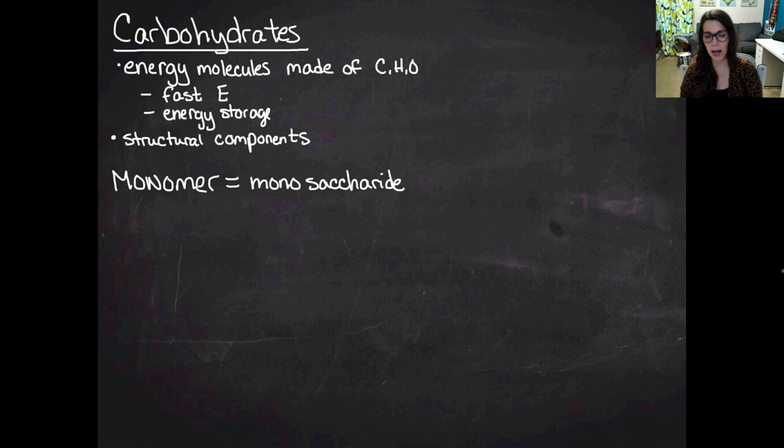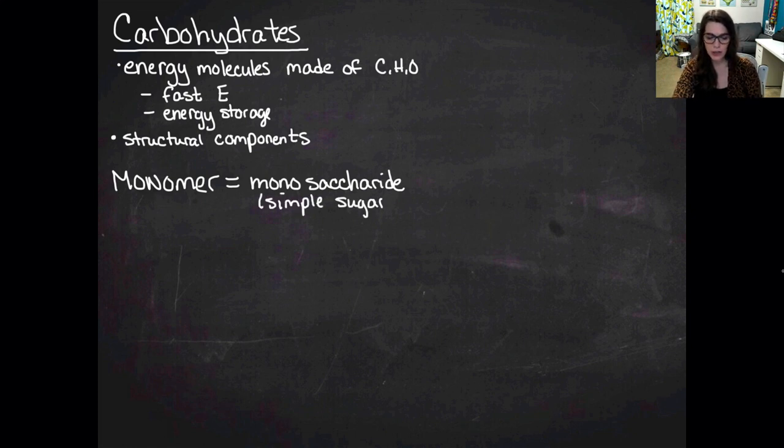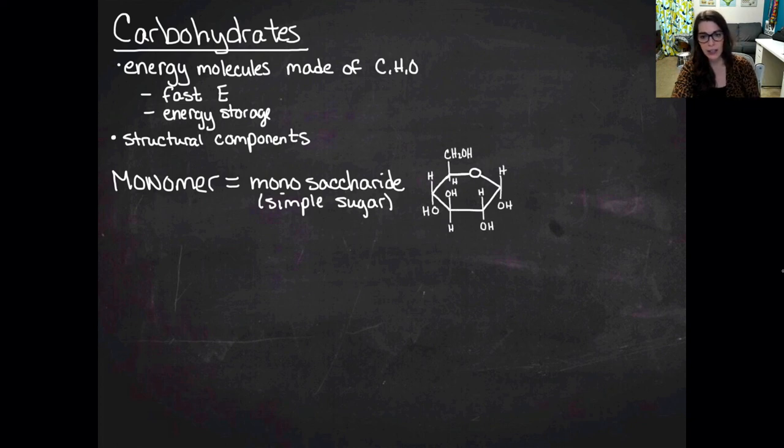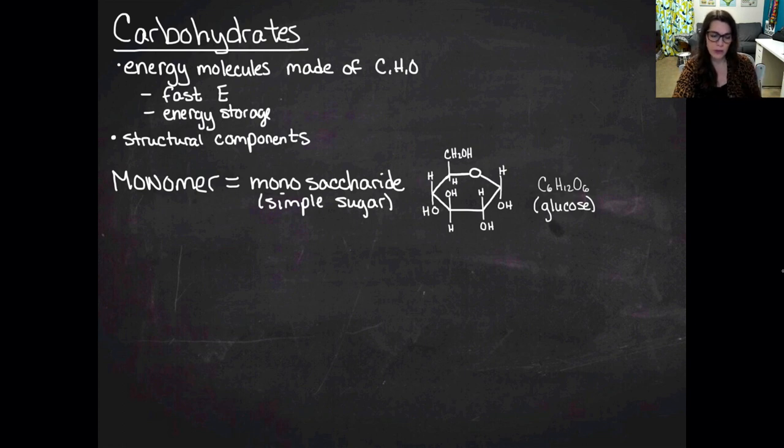The first thing we need to know is that the monomer of a carbohydrate is a monosaccharide. Mono meaning one and saccharide means sugar, so a monosaccharide is a single sugar. I'm going to draw a simple sugar here. You should recognize this from ninth grade biology - this is C6H12O6, better known as glucose. That is the most basic sugar that we talk about in biology because that's the sugar that powers our cellular respiration and allows us to make ATP, which we use to drive all body processes.